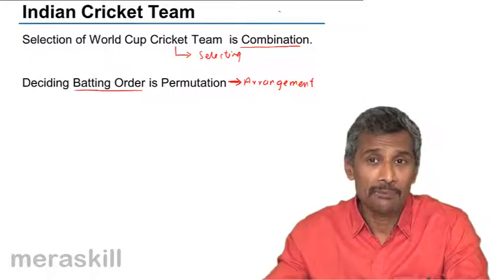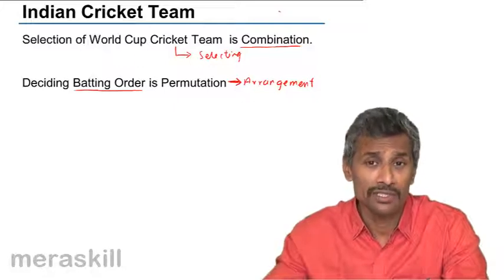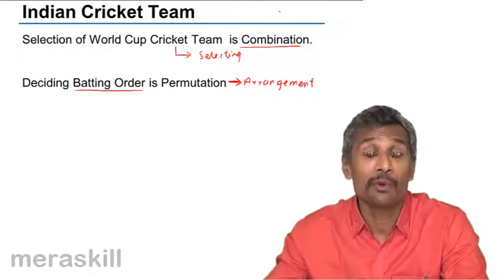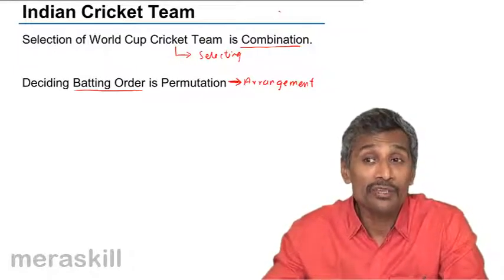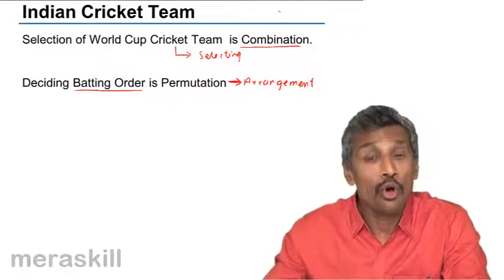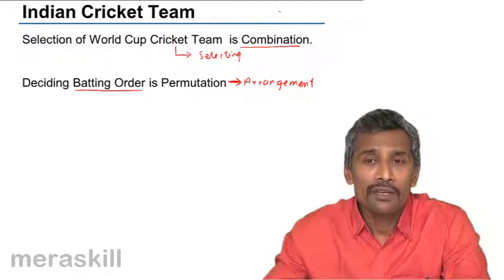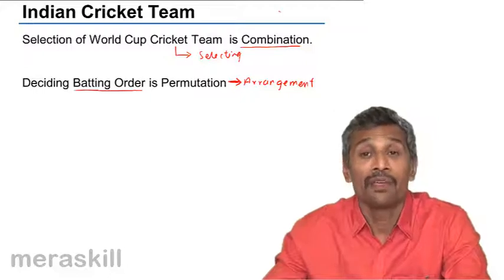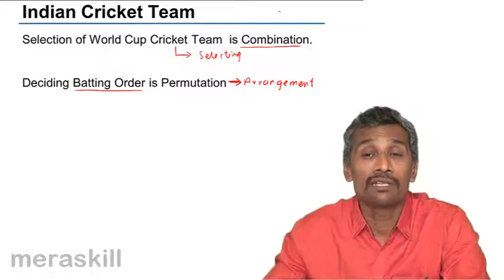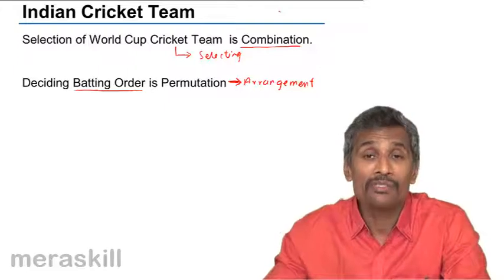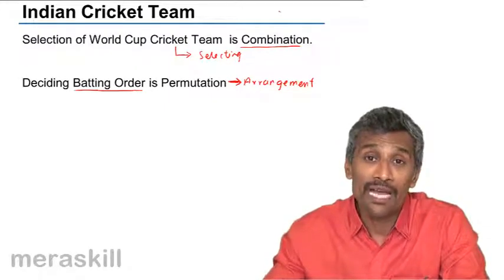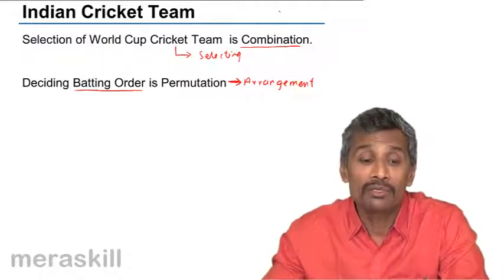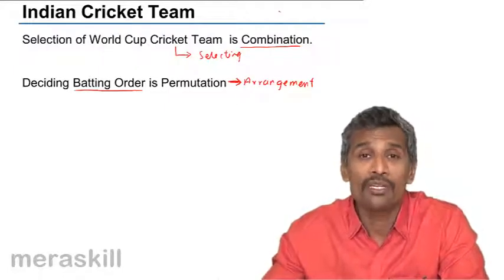Another interesting example: suppose you have a class of 20 children and need to select three for gold, silver, and bronze medals. Selecting A, B, and C out of 20 equally probable students is a combination. But within those three, who gets gold, who gets silver, and who gets bronze makes a difference — B getting gold, C getting silver, and A getting bronze is different from A getting silver. So who gets what makes it a permutation.